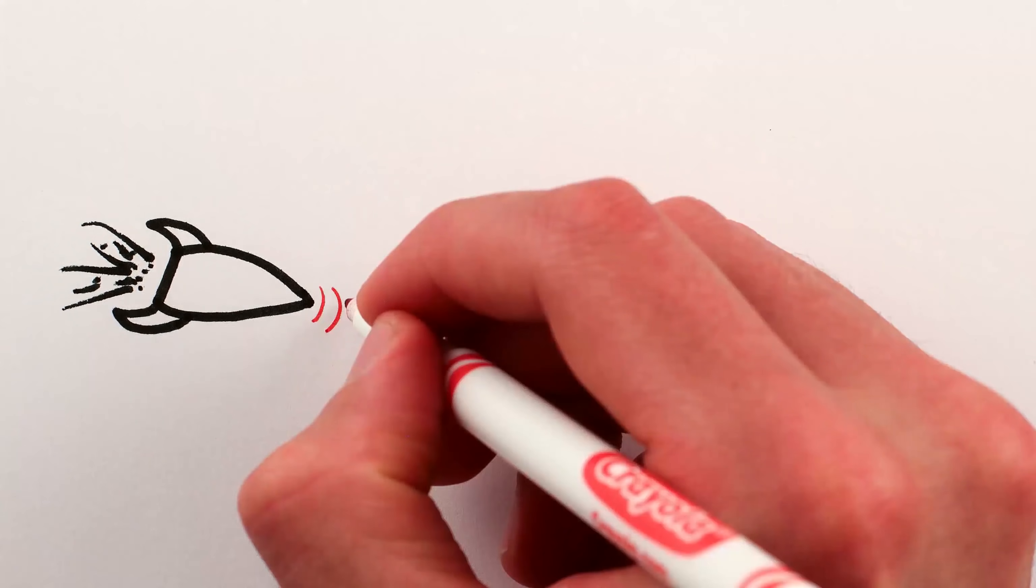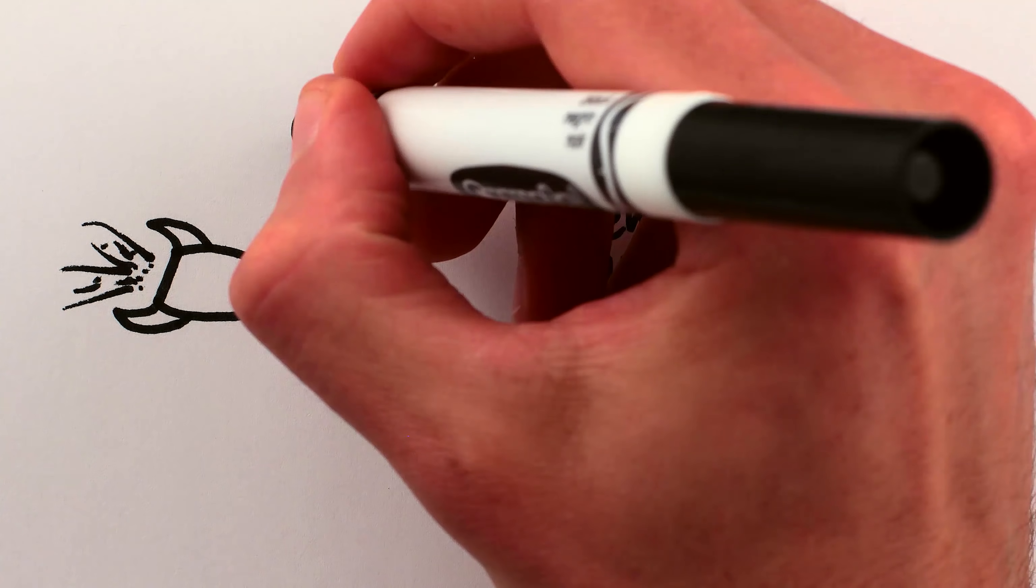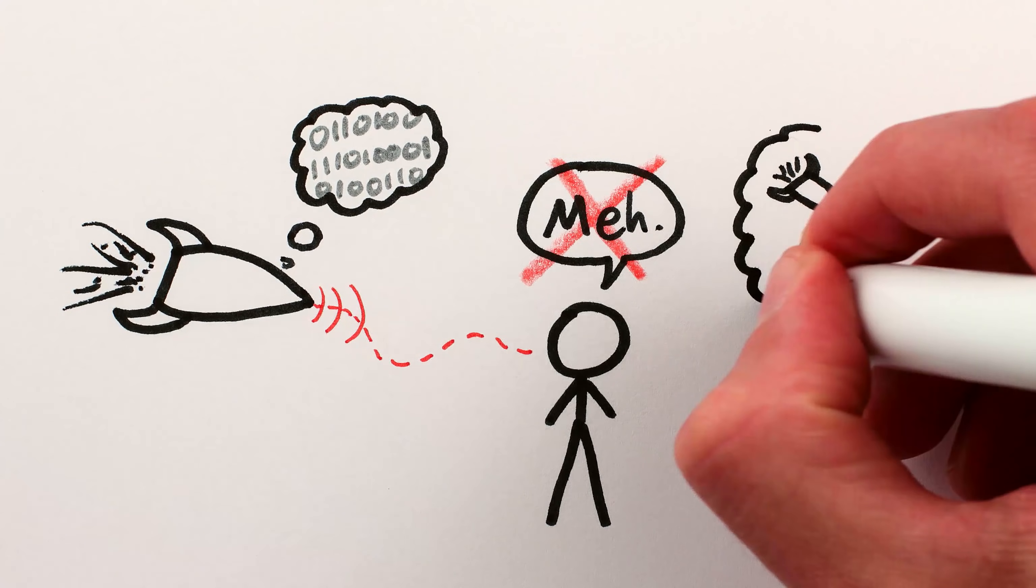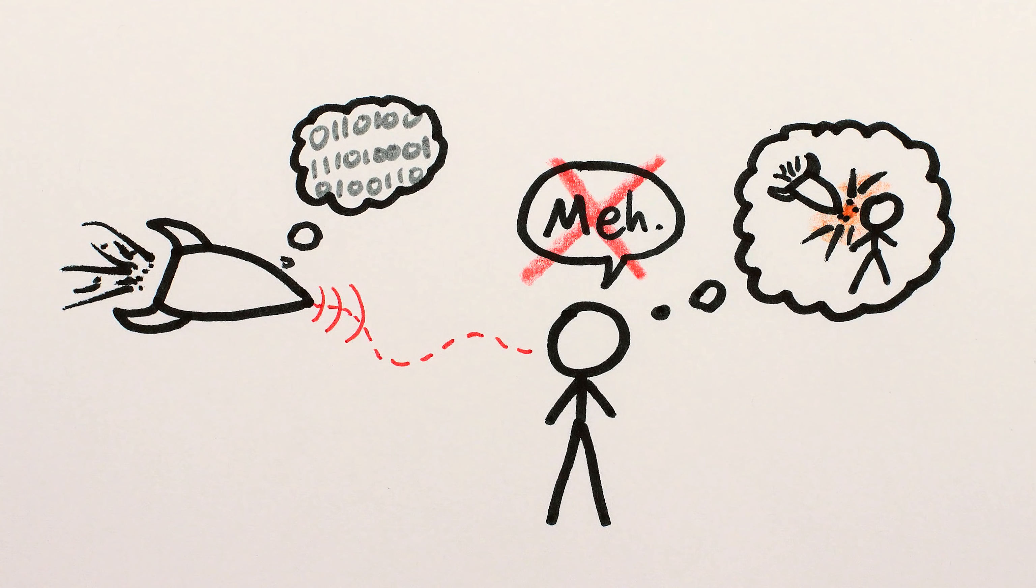If a heat-seeking missile is homing in on you, you probably wouldn't think, no need to worry, it's not evil, it's just following its programming. No, what matters to you is what the heat-seeking missile does and how well it does it, not what it's feeling or whether it has feelings at all.